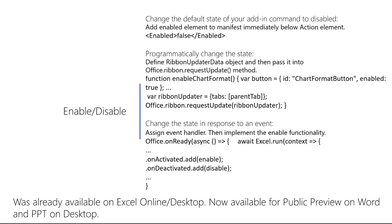To change the default state of your add-in command to disabled, you add an enabled element to the manifest immediately before the action element that's already present. For example, you add an enabled tag and set its value to false.